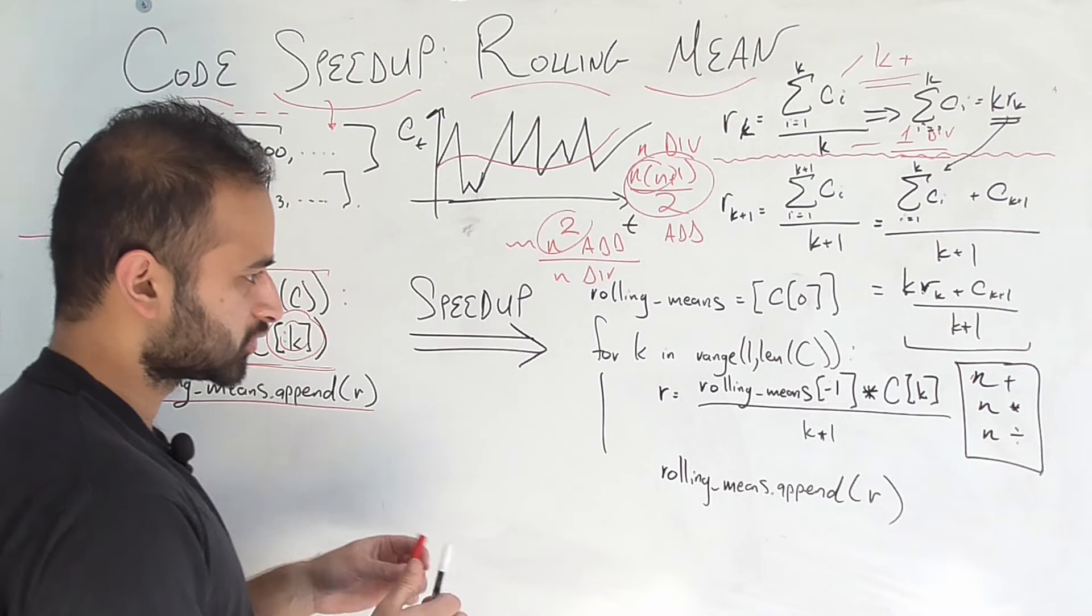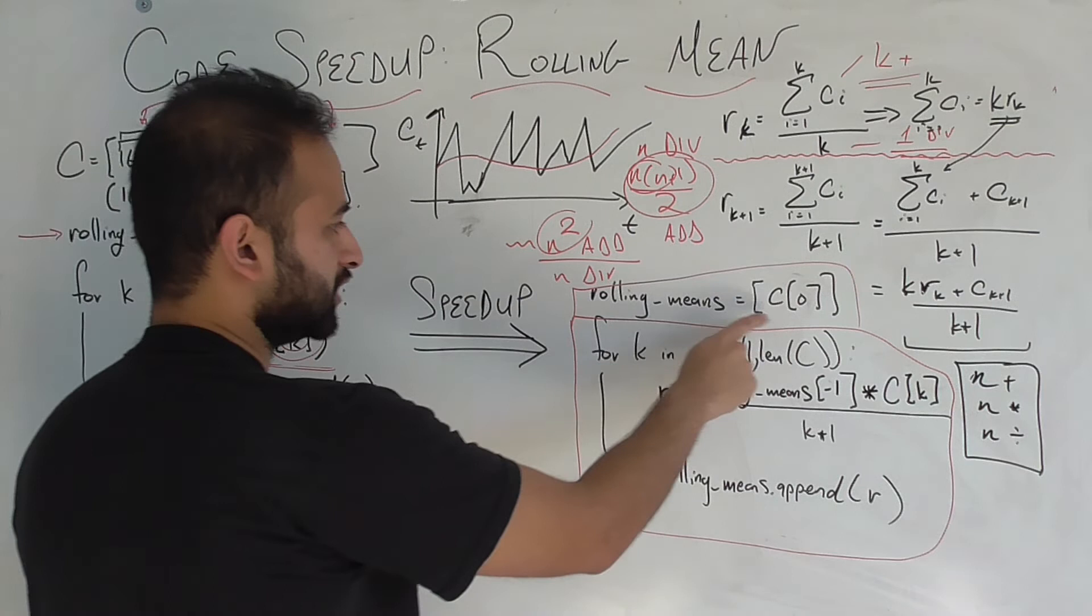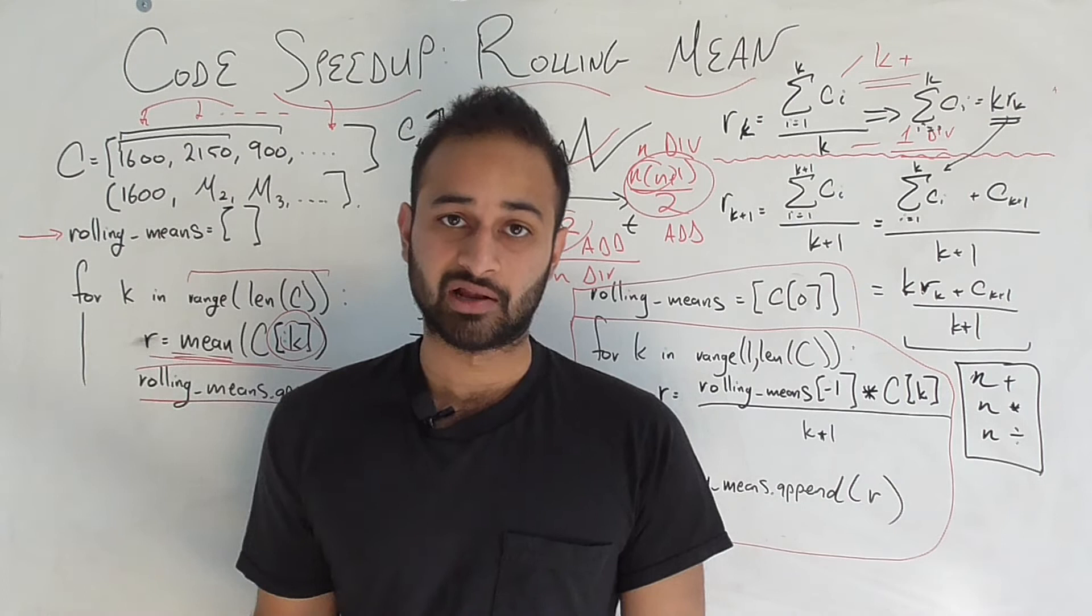So we rewrite the code in this way. Let me put a box around it because it's got a little messy. Going through this code, it starts the same. Going through the code, we initialize the rolling means to be the first number of the calories list because as we said, the first rolling mean is always just the first element.